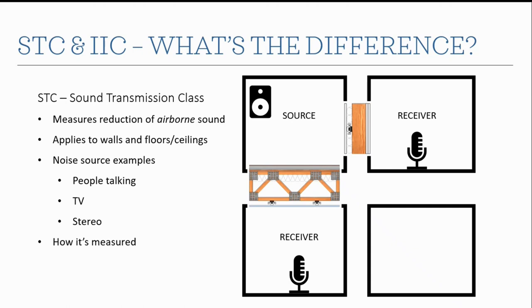STC applies to walls and floor-ceiling assemblies. In the source room we have a noise source — typically a speaker or couple of speakers — playing pink noise, which basically sounds like TV or radio static. We measure how loud it is in the source room and then how loud it is in the receiving room on the other side of the wall or floor-ceiling assembly. We take the difference between the levels in the source and receiving rooms, do some math calculations, and get an STC rating.